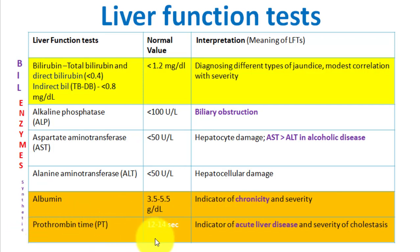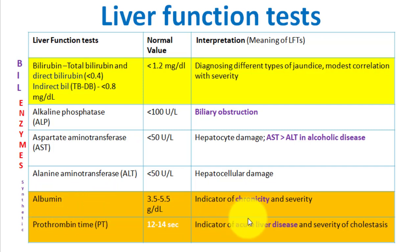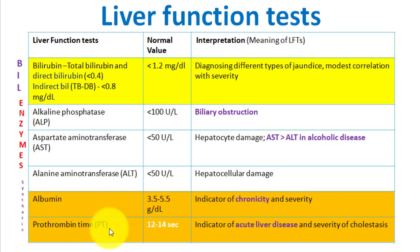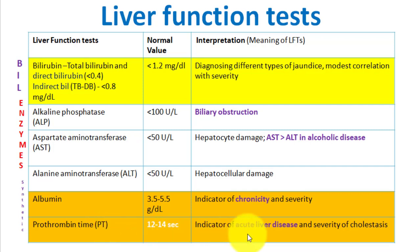Prothrombin time reflects acute liver disease — an increase in prothrombin time means acute liver disease, while decreased albumin means chronic liver disease. The reason for this is that albumin has a longer half-life of about three weeks, while prothrombin has a shorter half-life of about three days. Therefore, a decrease in prothrombin concentration — reflected by increased prothrombin time — indicates acute liver disease, and decreased albumin reflects chronic liver disease.